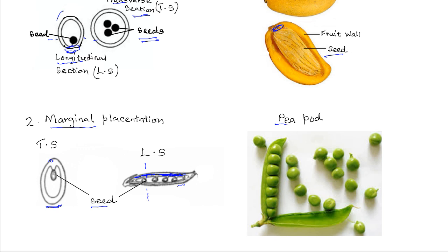In a peapod, the seeds are arranged along the margin. Even bean pods have marginal placentation. In marginal placentation, since the placenta is found along one ridge on the wall of the ovary or fruit wall, the ovules or seeds are attached to the placenta forming a row.